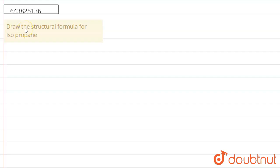Hello everyone. The question is: draw the structural formula for isopropane. First, we have to understand what the 'iso' prefix is. Iso is a prefix used in the common name system.